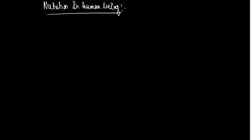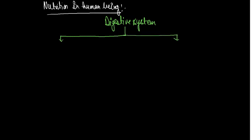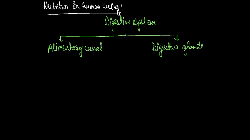We all know that in nutrition in human beings, digestion involves the alimentary canal, digestive tract, or whatever it is called. The digestive system consists of two parts. The first part is called the alimentary canal, and the second one is called the digestive gland.